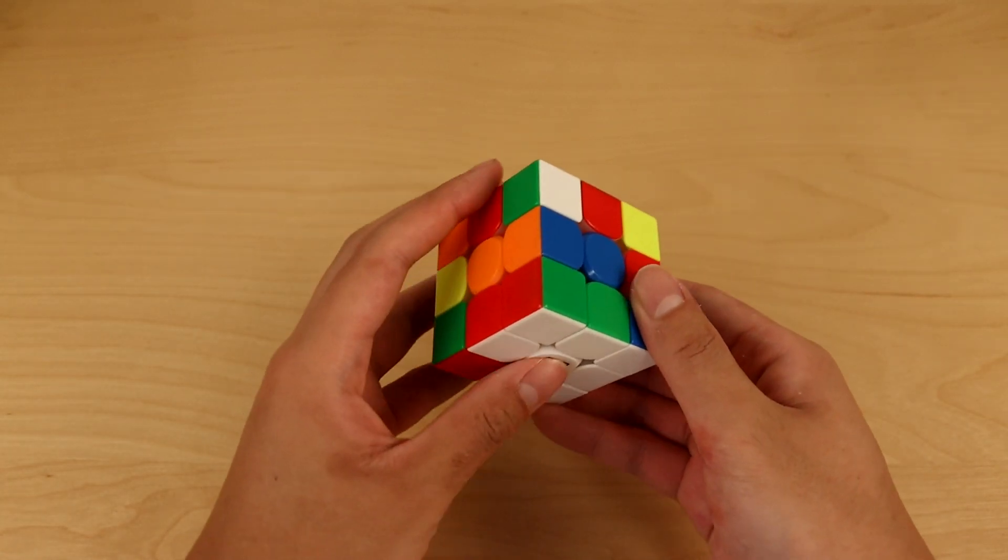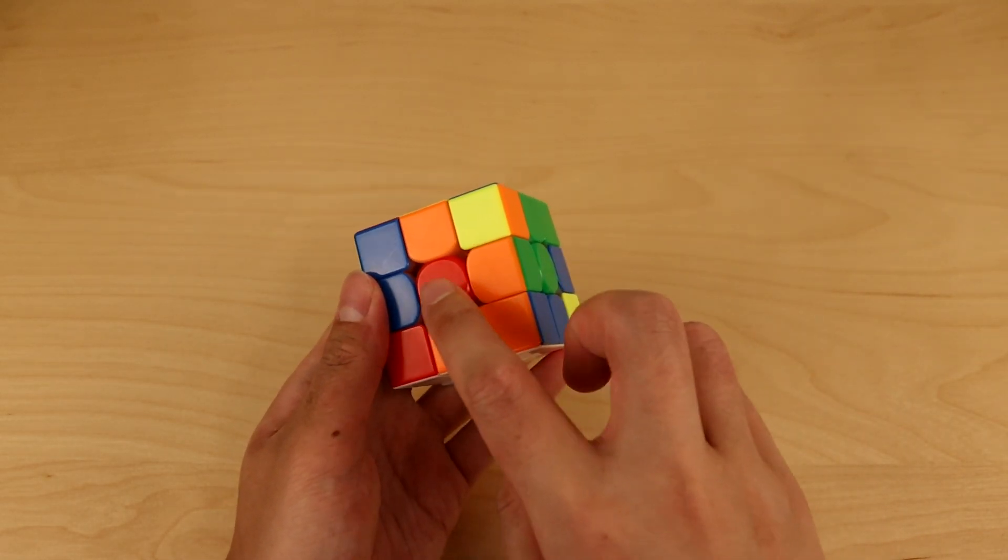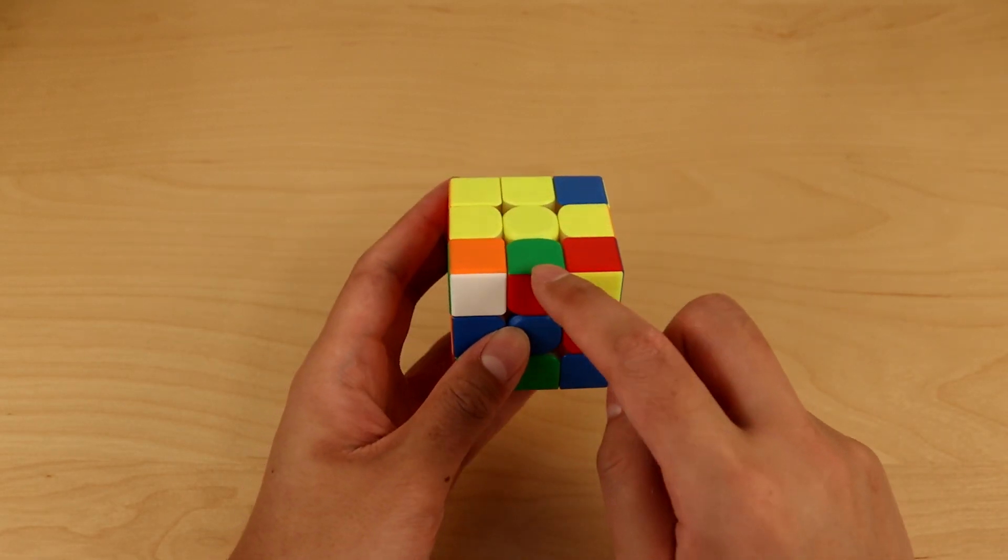Finally, as mentioned before, whenever you solve a corner, you want to solve its corresponding edge. The corresponding edge is right here, the red-green, and that edge is right here. So before we fully align this cross, let's make sure to solve this edge.